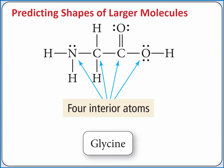We can apply VSEPR theory systematically to the interior atoms of a larger molecule to determine its overall shape. For example, the organic molecule glycine has four interior atoms. Remember that interior atoms are bonded to two or more other atoms.